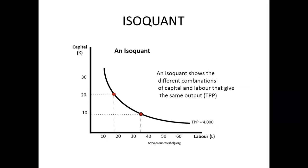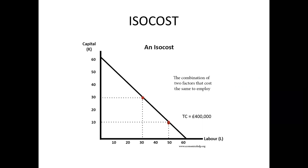The next thing required is iso cost. Iso cost refers to the combination of two factors that cost the same to employ. It simply means it defines the budget or the cost within which both factors — labor and capital — can be employed or utilized. So iso cost and isoquant are the two things required to construct producer equilibrium.